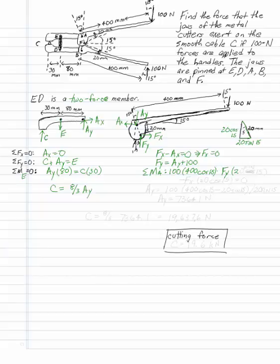So this is going to be 20 sine 15. And this is going to be 20 cosine 15. So the F, Y is going to have a moment arm of 20 cosine 15.